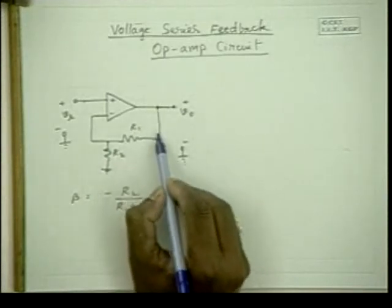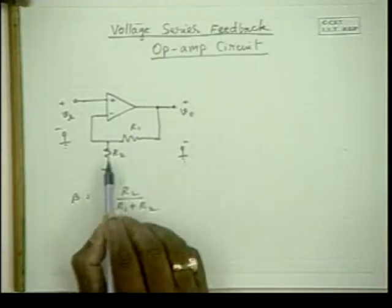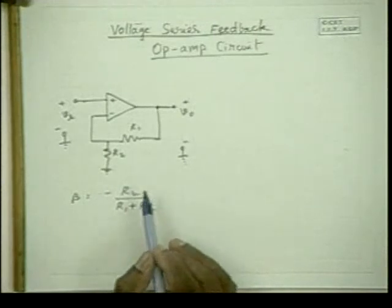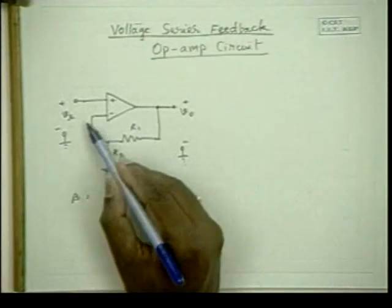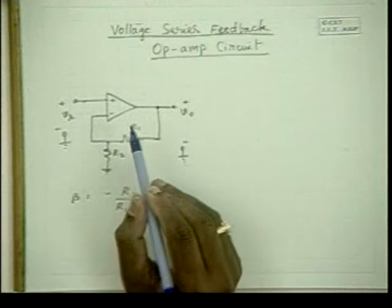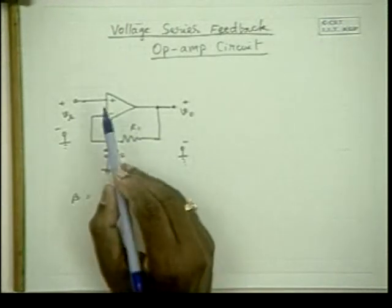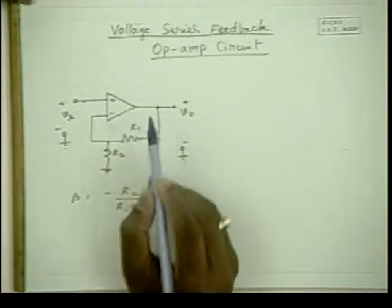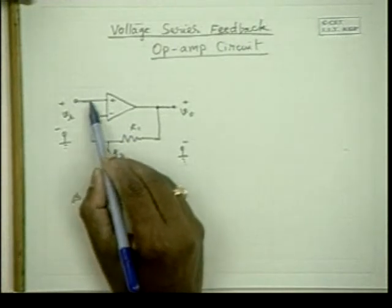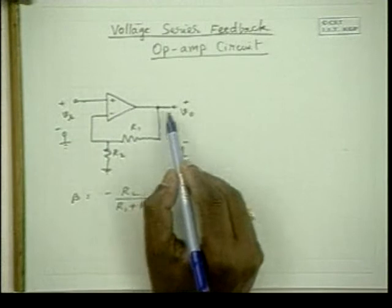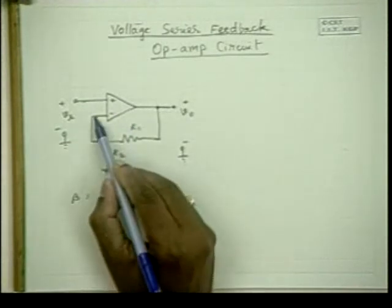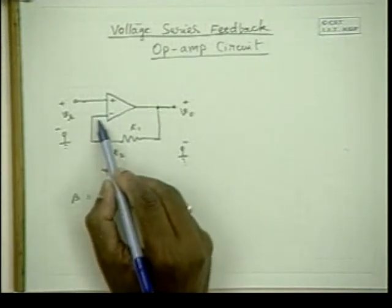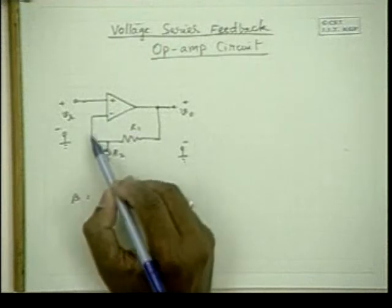A fraction of the output voltage — specifically R2 by (R1 + R2) — is fed back. So beta equals minus R2 by (R1 + R2), because this fraction is applied to the negative terminal. The operational amplifier here is basically a difference amplifier: the output voltage is the amplified version of the voltage at the positive terminal minus the voltage at the negative terminal.